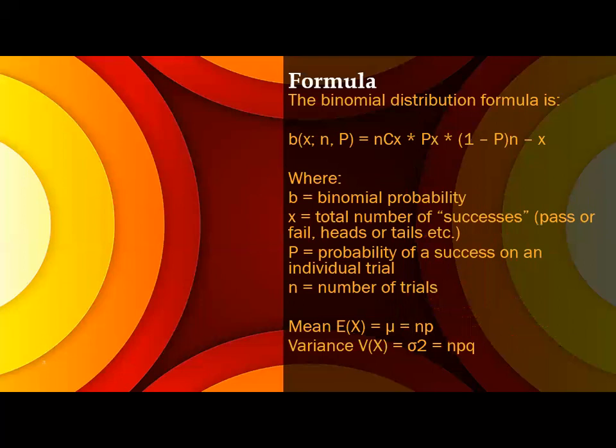The binomial distribution formula goes like: b(x, n, P) = nCx. So here x is the number of trials we want success, n is the total number of trials, and P is the probability. The formula is nCx, so combination of nCx.